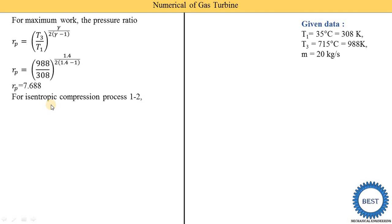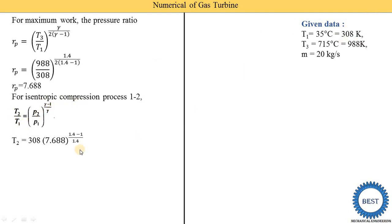Next, we find T2 by following the isentropic compression process 1 to 2. The equation is: T2 / T1 = (P2 / P1) ^ ((gamma − 1) / gamma). Substituting P2/P1 = RP = 7.688, T1 = 308 K, and gamma = 1.4, we calculate and get T2 = 551.68 Kelvin. So the temperature rises from 308 K at the compressor inlet to 551.68 K at the outlet.